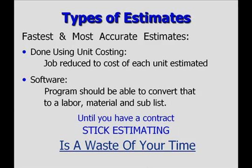That means all the labor and all the materials that go into assembling that particular item. Now, if you're using software in your estimating, your program should be able to convert that unit costing to a list of labor, material, and subcontractors that you're going to need to do that job.